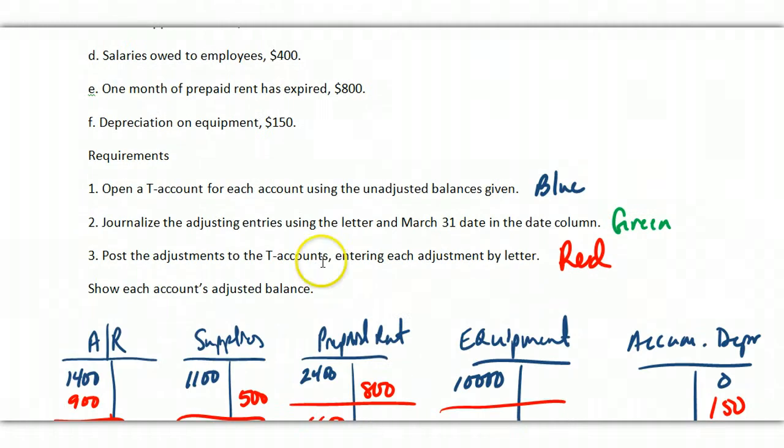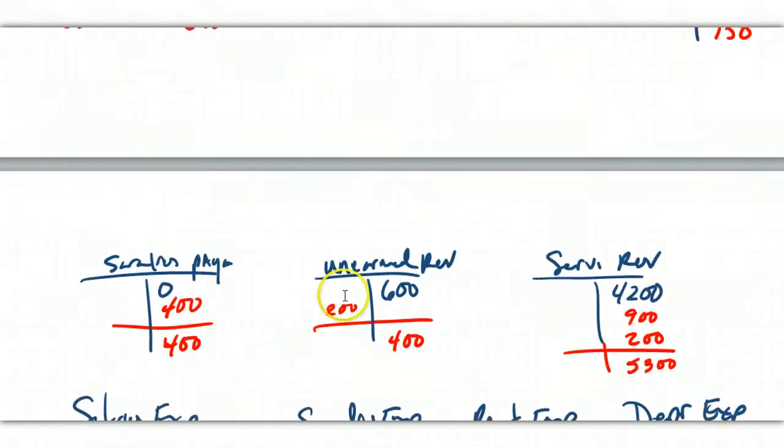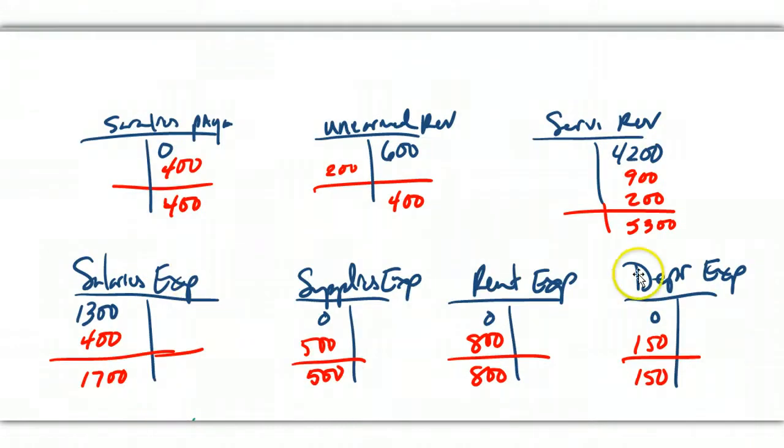And so the problem asks us to open the T-accounts for the unadjusted balances, and I've done that in blue, journalize the adjusting entries, which I've done in green, and post to the T-accounts, which I've done in red. So the blue here represents the unadjusted balances of these accounts.